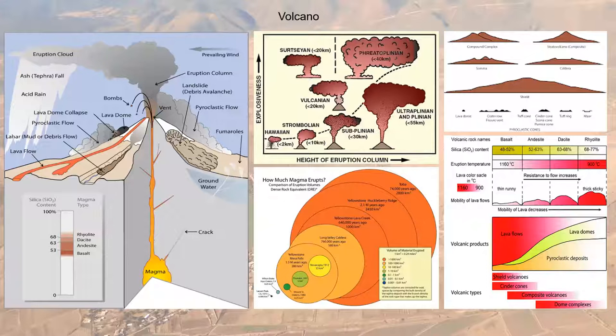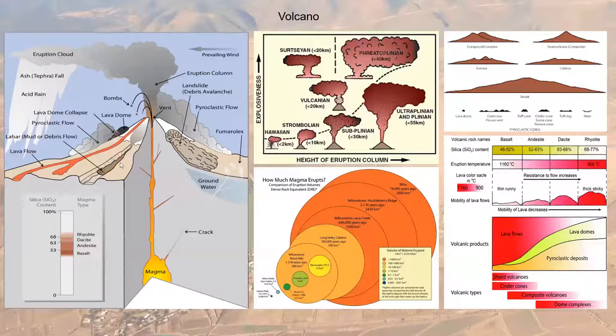When you investigate volcanoes, you see that not every volcano is the same — they are not so simple. Volcanoes have very complex systems. To resolve this complexity, we need to understand what kind of eruptions took place, their intensity, what magma was involved, and the structure of the volcano. There are different types of eruptions based on the height of the eruption column.